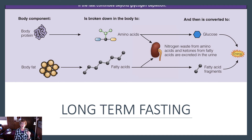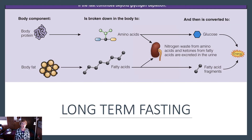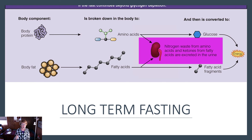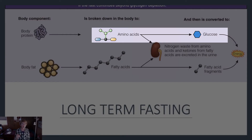Once those glycogen stores are depleted in a short-term fast, the body will draw on protein for energy. Depending on how much fat stores you have, the body will continue to use fat for energy. Protein will be broken down — hydrolyzed or catabolized — into individual amino acids. We will get rid of that nitrogen because the body can't use nitrogen for energy. Those carbons will be converted to glucose, which will be used for the brain and central nervous system.